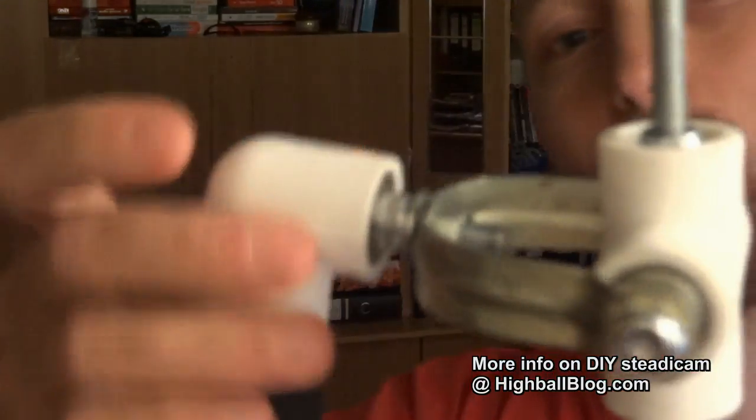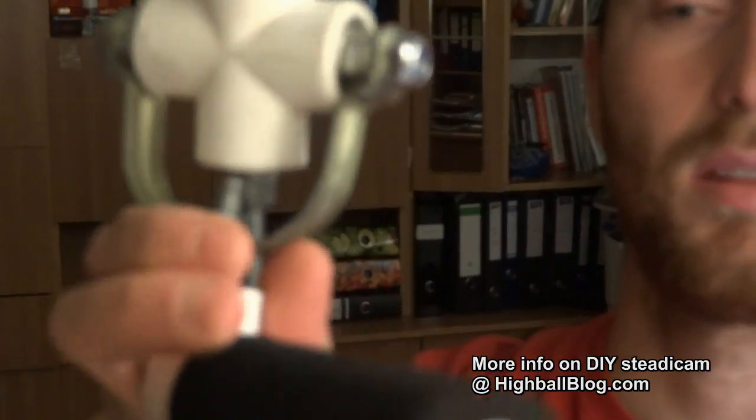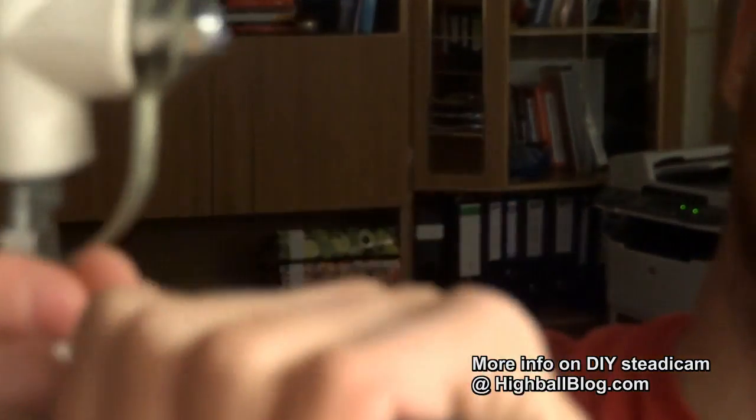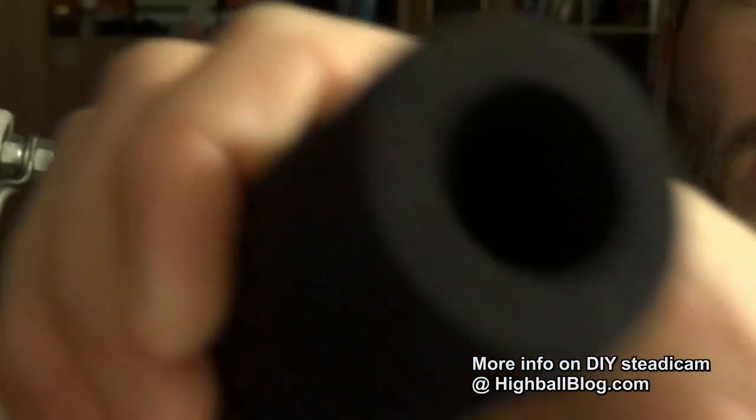So this is the gimbal. This is plastic, this is also plastic, and what you see here is a mountain bike handlebar grip, like a sponge, just to hold the gimbal better.